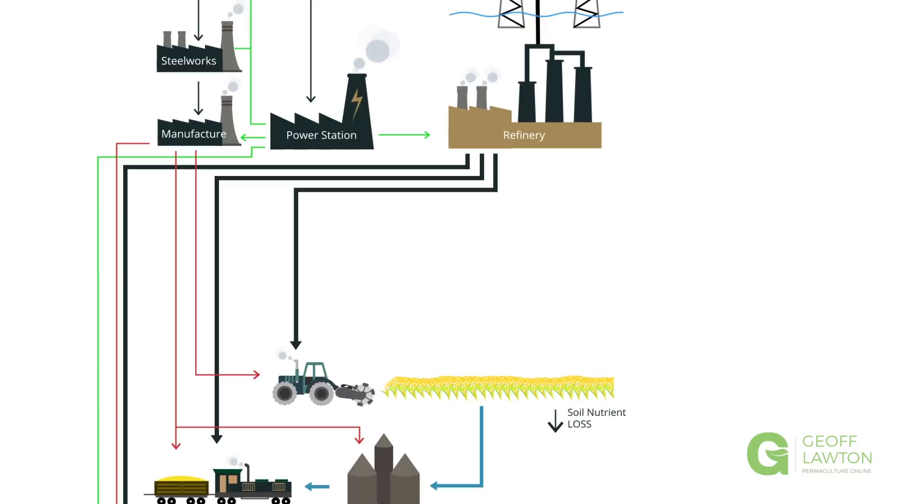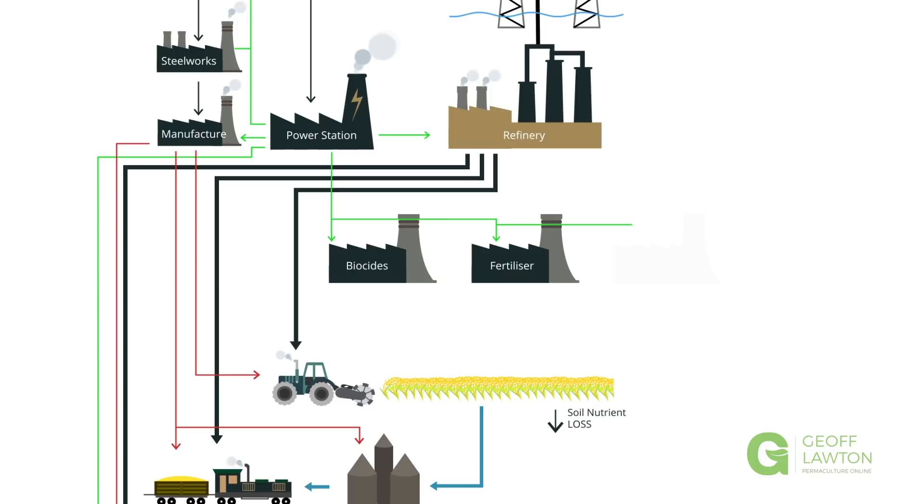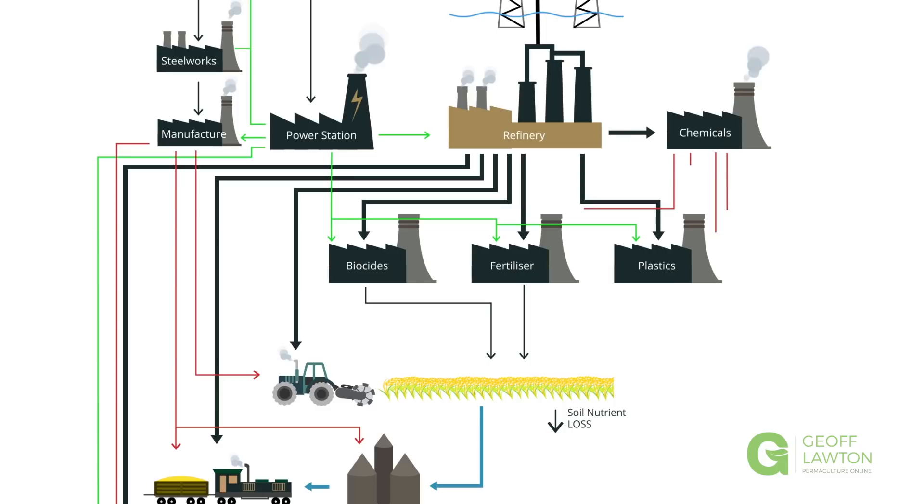Now that grain crop doesn't like to grow organically very easily. And usually it also needs biocides and fertilizers. And a lot of this needs to be packaged in plastic. So all of that comes from a refinery, which actually provides chemicals to all these industries.